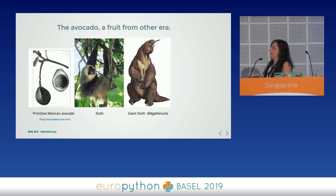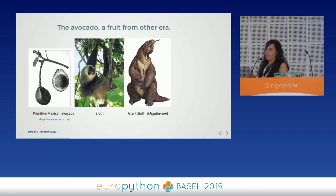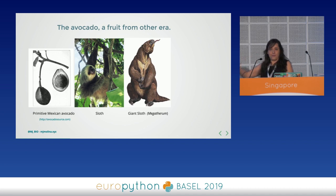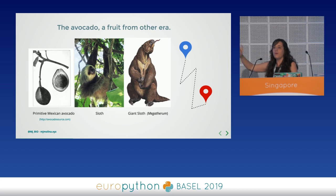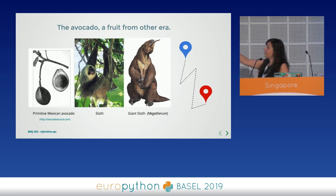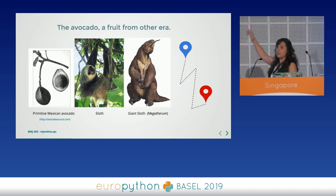The giant sloth needed to eat avocados and other fruits, and for that it needed to move around a lot. That was really useful for avocados because there was a huge distribution of the fruit and they survived. But at some point this animal disappeared — and then humanity appeared, and we discovered that avocados were amazing.